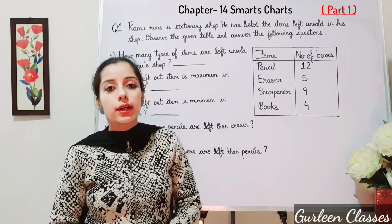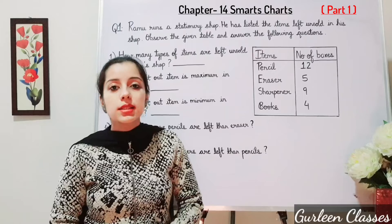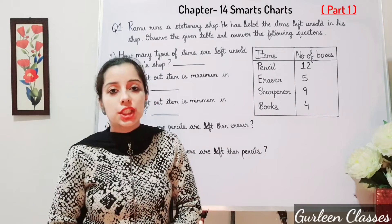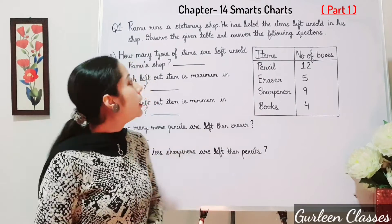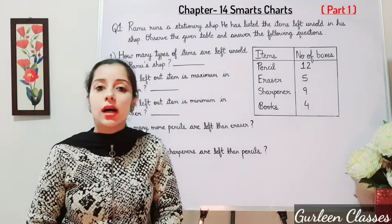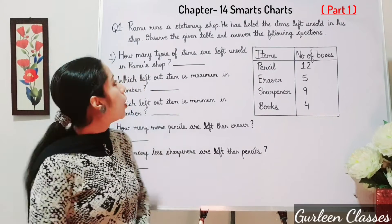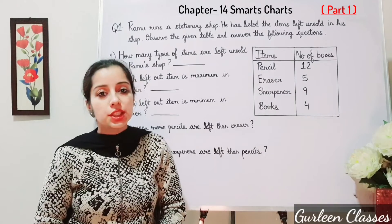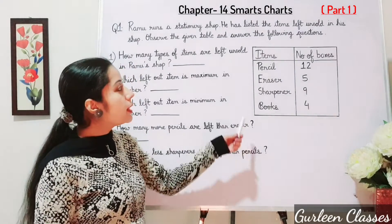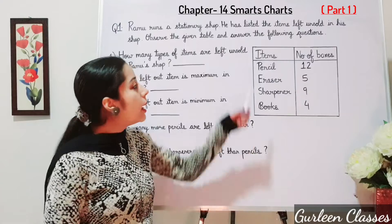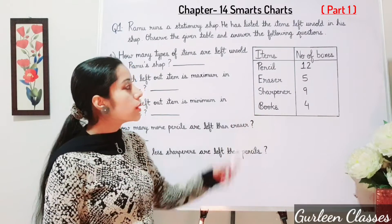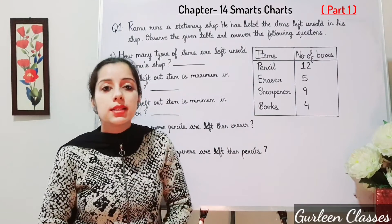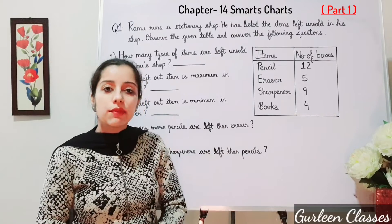As I told you the term 'interpret the data,' let us do some questions based on that. Question number 1: Ramo runs a stationary shop. He has listed the items unsold in his shop. Observe the given table and answer the following questions. The table shows items — pencil, eraser, sharpener, books — and the number of boxes.